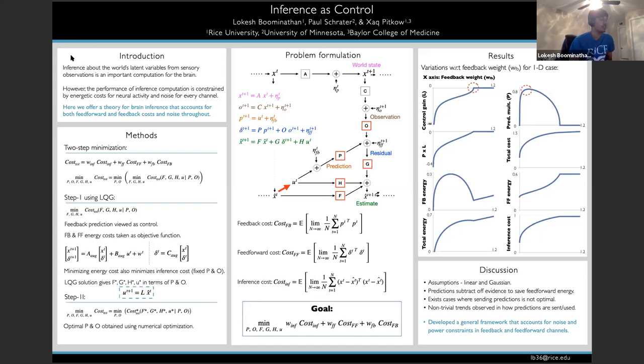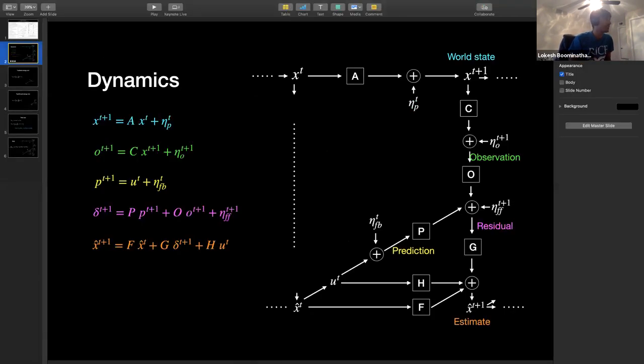And in order to do this we formulate this problem as an inference problem on a graph, whereby feedback is viewed as a control signal aiming to maximize how well an inference tracks a given target state. So in order to more concretely define our problem formulation I'll just use a few slides to do that.